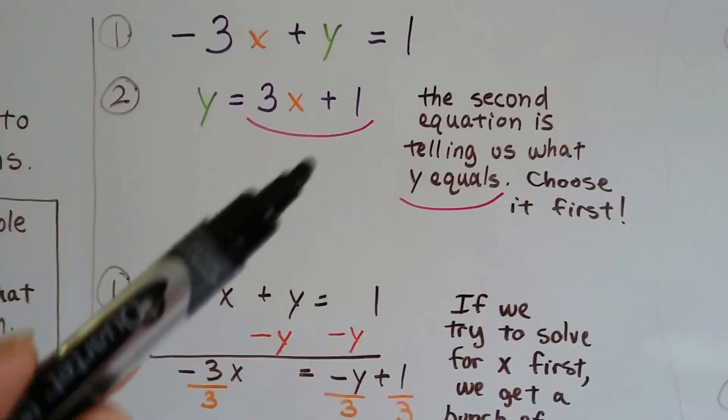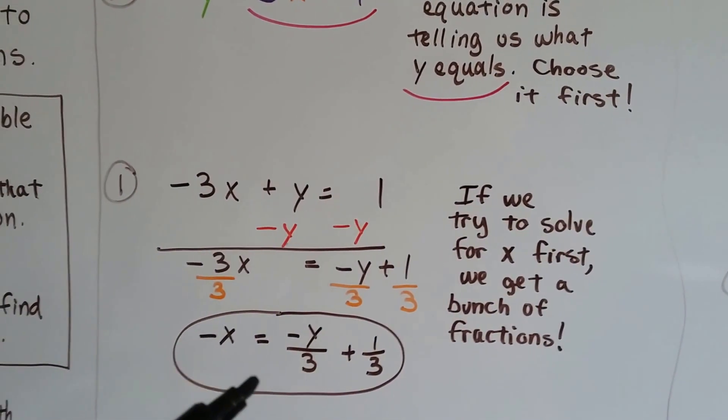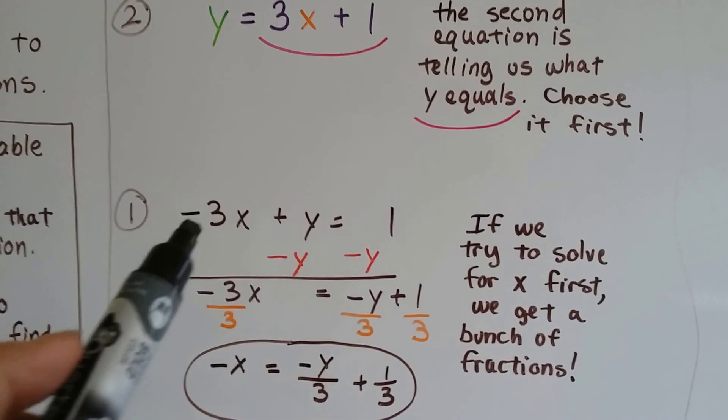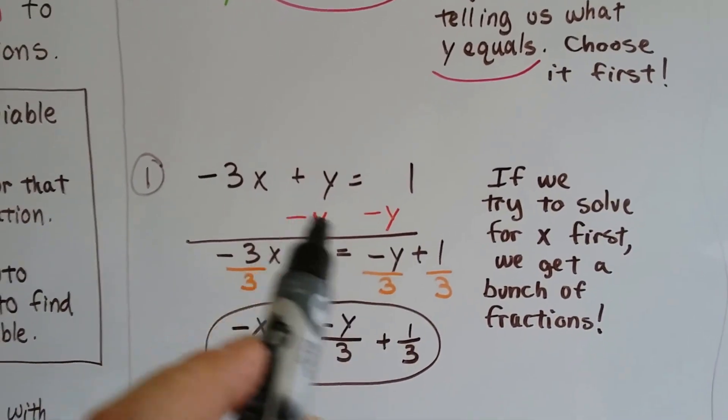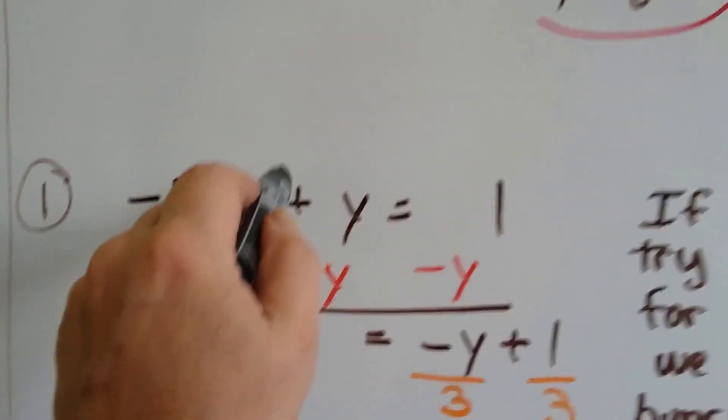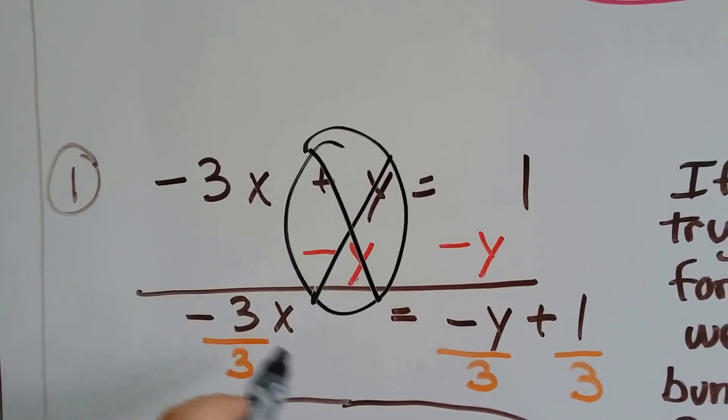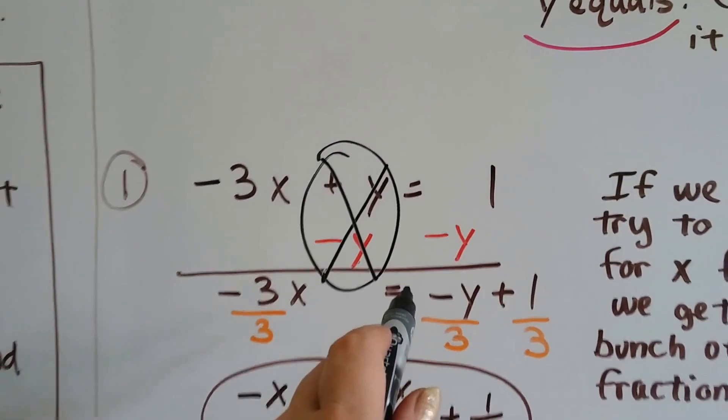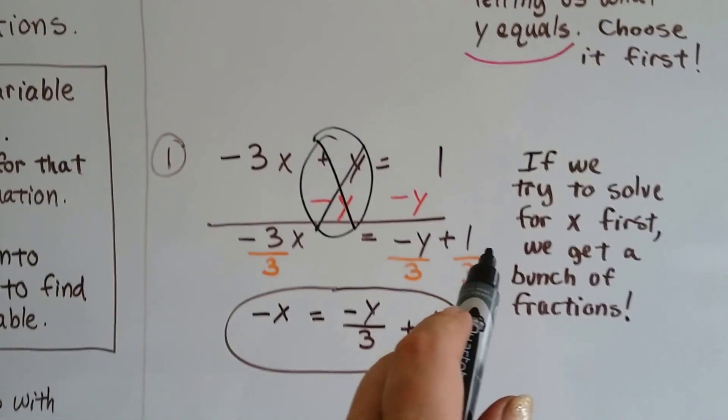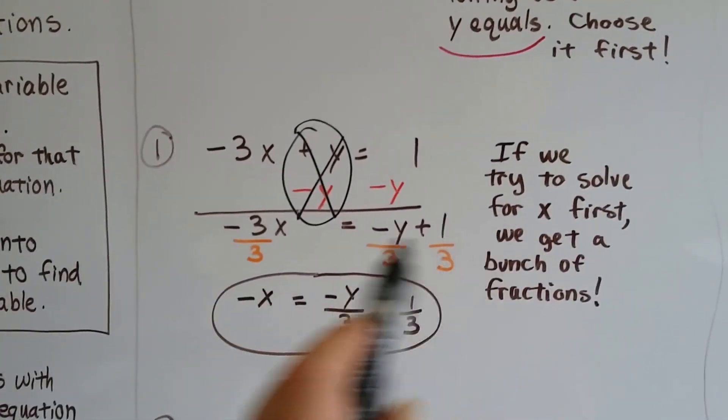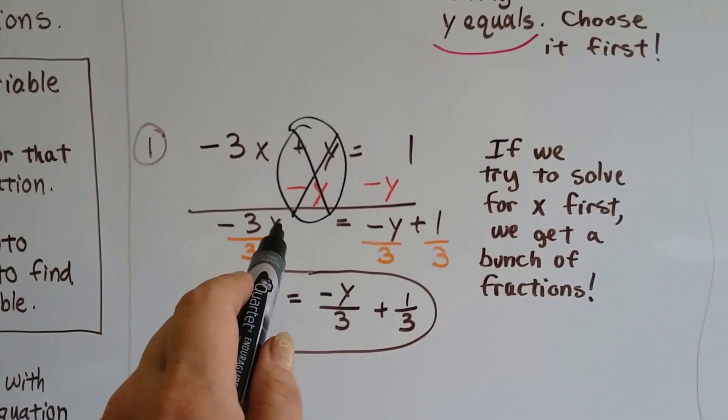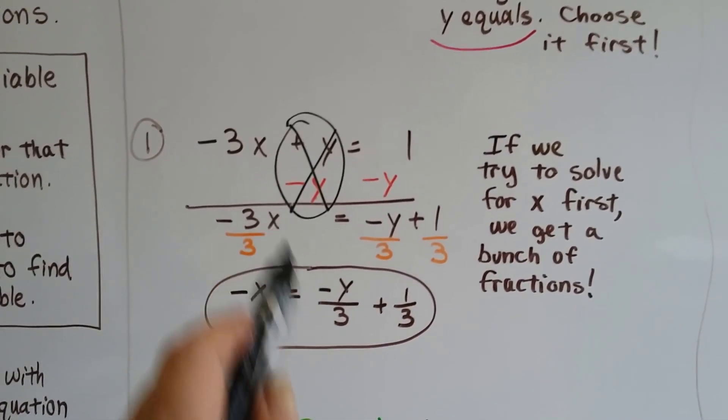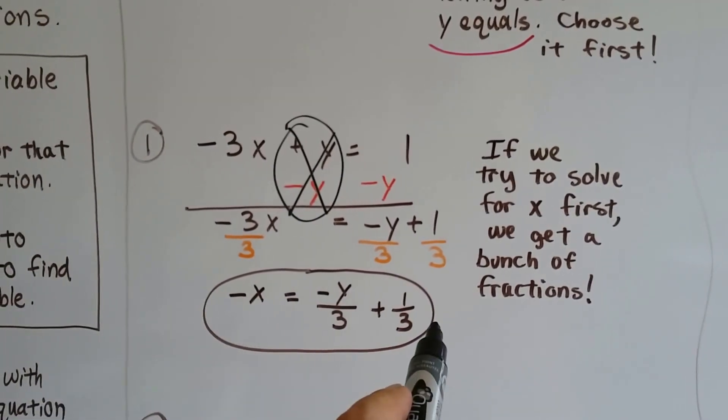It was smarter that we did, but what if we tried to solve for x first? If we had used this one and we had subtracted y from each side and created a zero pair, we would have had -3x equals -y plus 1. And we would have had to divide each of these terms by 3 to isolate and find out what that x's value is. You know what would have happened? We would have gotten a bunch of fractions.